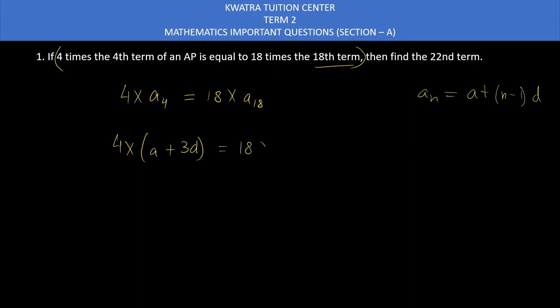Then 18 as it is, A18 formula will be A plus 17D. Then you can multiply: 4 with A gives 4A, 4 with 3 gives 12D, 18 with A, then 18 into 17 gives 306D.